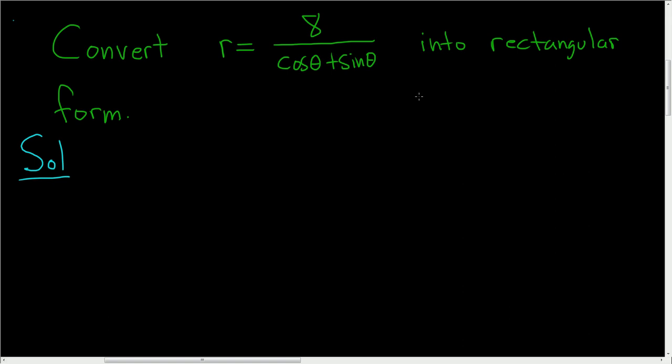There's a couple of formulas that we might have to use in this problem. The first is x equals r cosine theta. Another formula we can use is y equals r sine theta. And another one, which we might use, I don't think we will, is x squared plus y squared equals r squared.